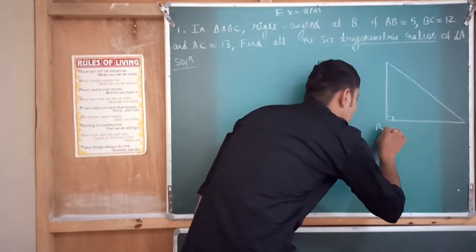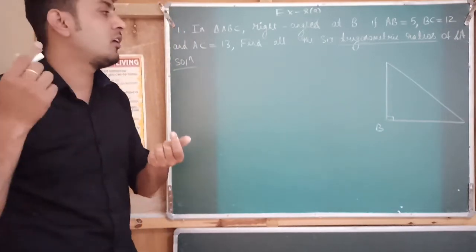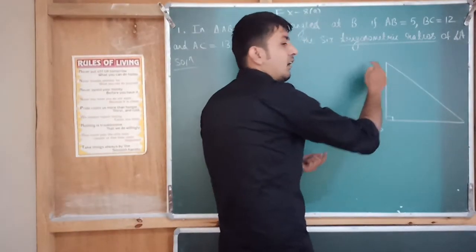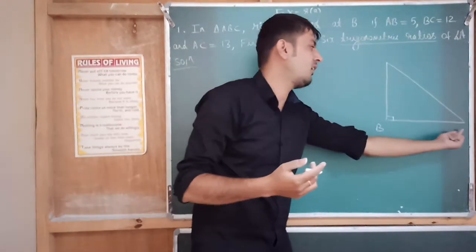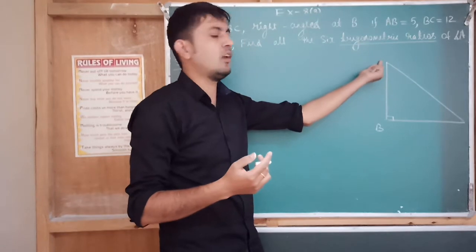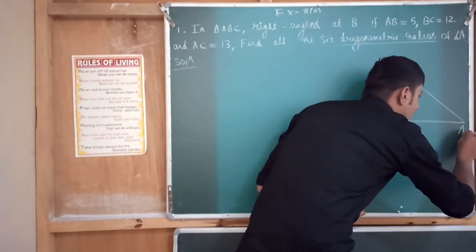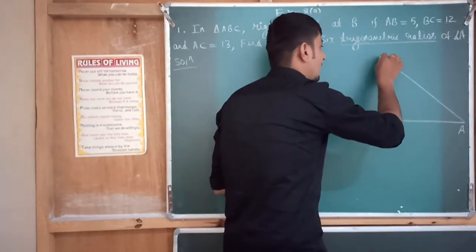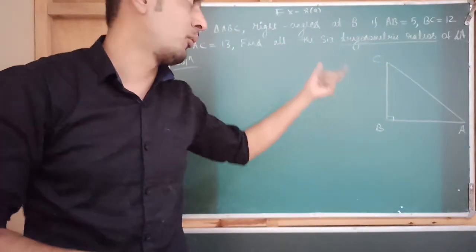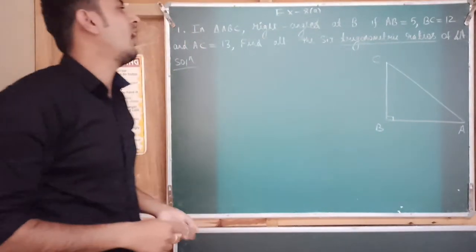Now where do we put A and C? You can put A here or here — it's up to you. If I put A here it becomes ABC one way; if I put A on the other side it becomes ABC another way. Let me put A here so we get triangle ABC — a right-angle triangle with the right angle at B.